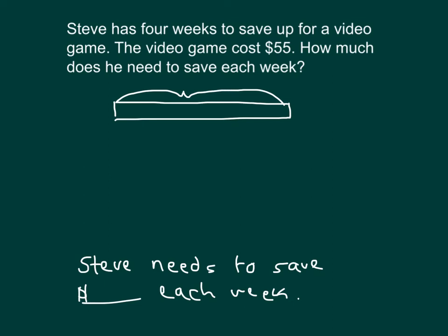And this is making the assumption that he saves the same amount each week. That's why we can go ahead and divide the whole up into four units. So four units equals $55. And we're trying to figure out how much each of those units is. So one unit is equal to $55 divided by four.